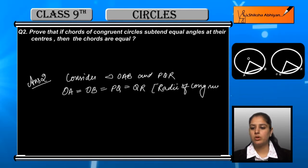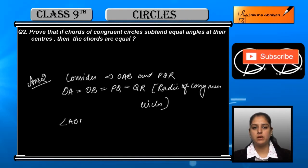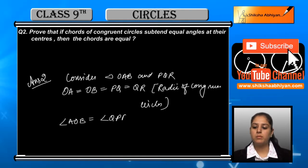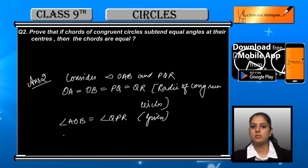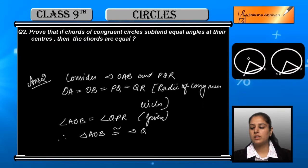So we will write the angles that are angle AOB equal to angle QPR. They are equal and they are given to us. Now in this case, we have triangle AOB is congruent to triangle QPR.